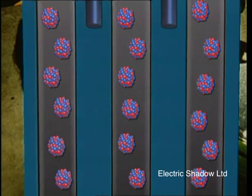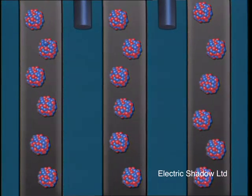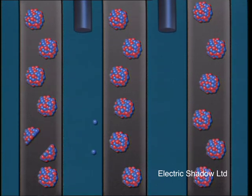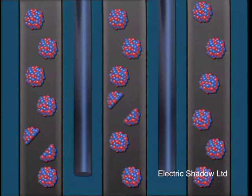Within each fuel assembly are movable control rods which can absorb neutrons and slow down the chain reaction, so controlling the heat energy produced.